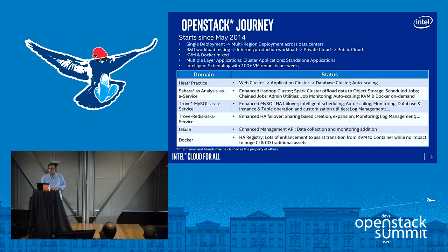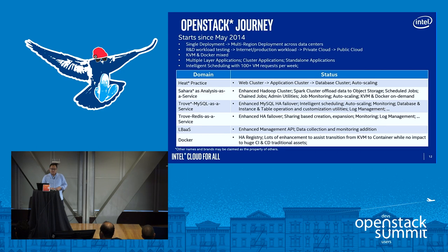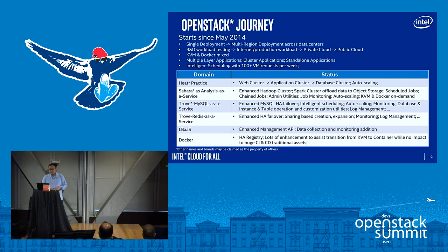Their OpenStack journey started early, around 2014. They started from a single deployment and then moved to multi-region deployment across different data centers — a pretty typical OpenStack adoption process in China. Most companies start with a single deployment for testing, then move the cluster into production, and start using more and more components. Currently they run a KVM and Docker mixed environment, a multi-layer application including cluster applications and standalone applications, with intelligent scheduling at around 100 virtual machines per week. They have used many OpenStack components including Heat, which they use for auto-scaling.